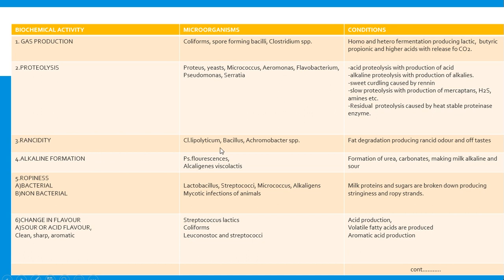Rancidity involves Clostridium lipolyticum, Bacillus, and Achromobacter species; it is the lipolytic activity or lipolysis — fat degradation producing rancid odor and off-flavors. Alkaline formation is caused by Pseudomonas fluorescens, Pseudomonas alcaligenes, and Alcaligenes viscolactis, with formation of urea and carbonates making the milk alkaline.